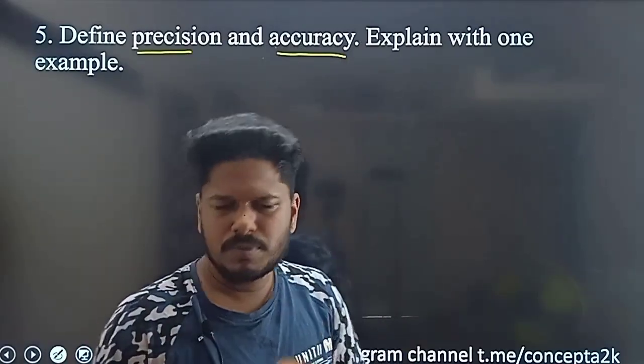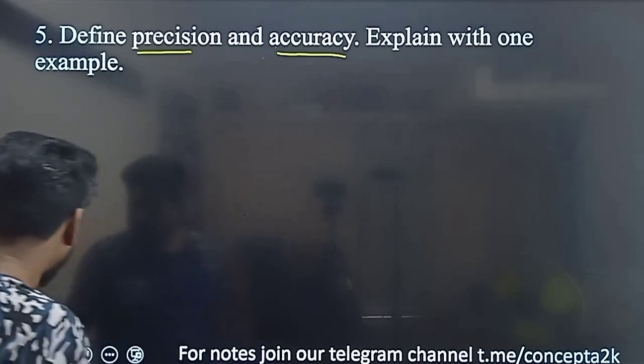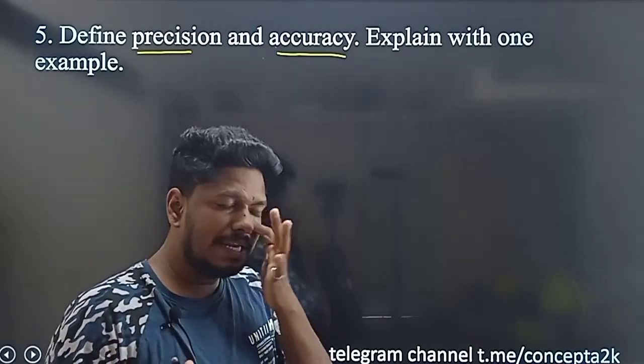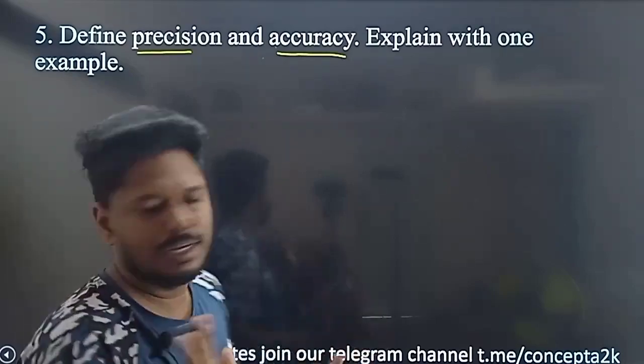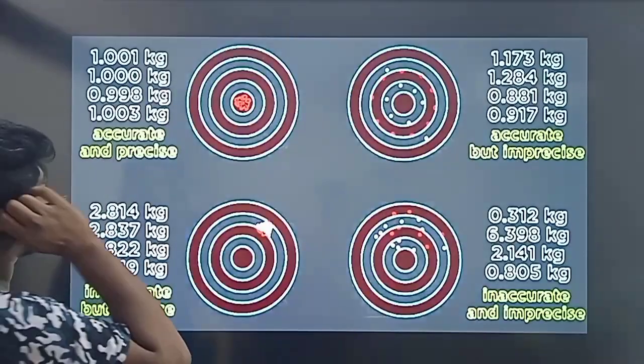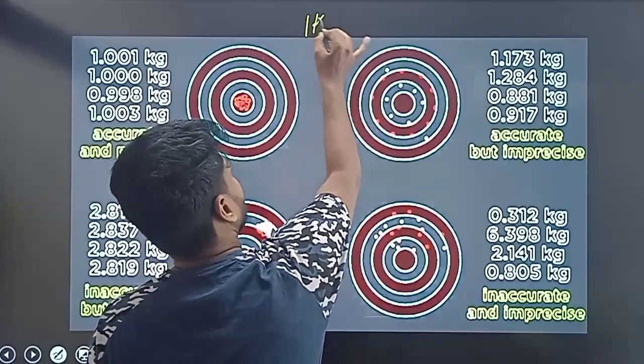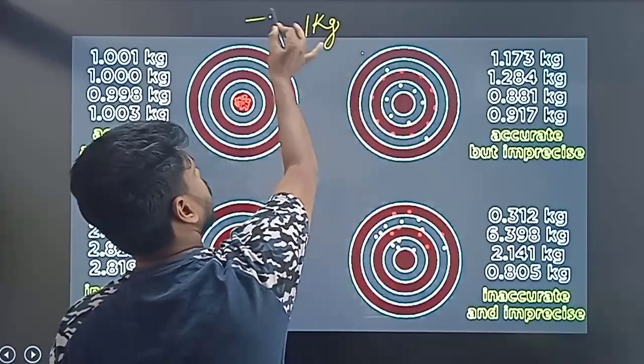If you look at the true value, what is the true value? What is the correct value? Let me say that this object is 1 kg. This is the true value.